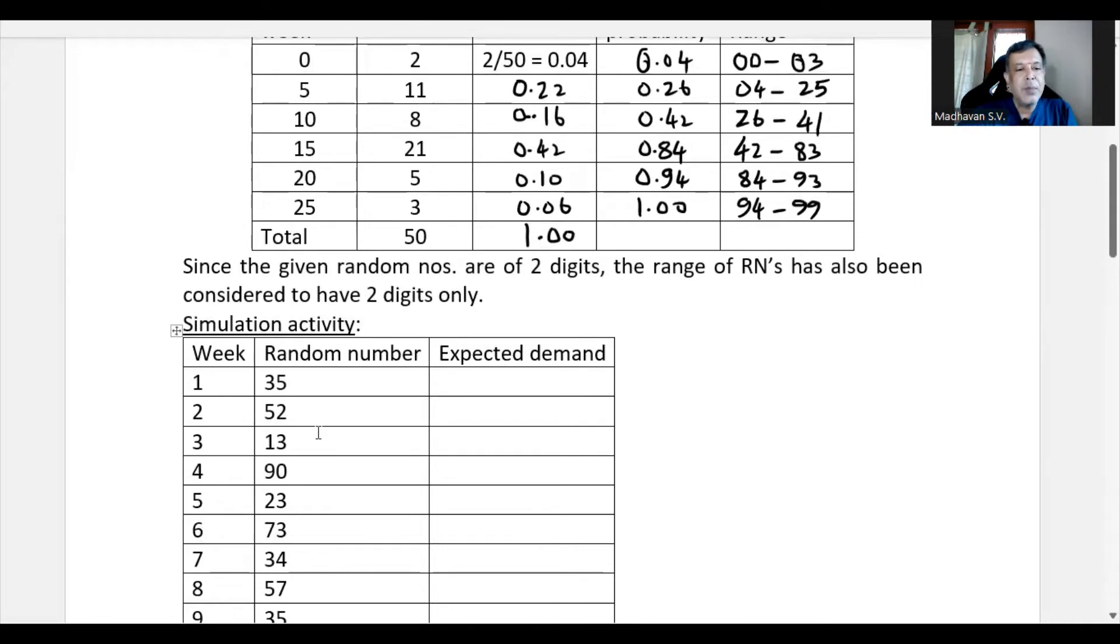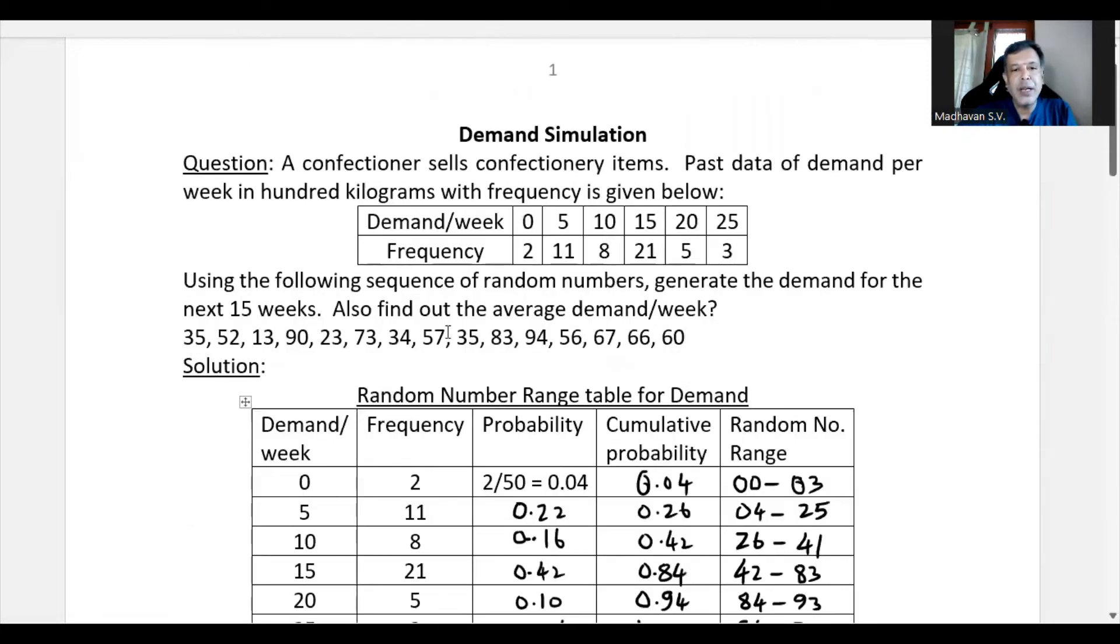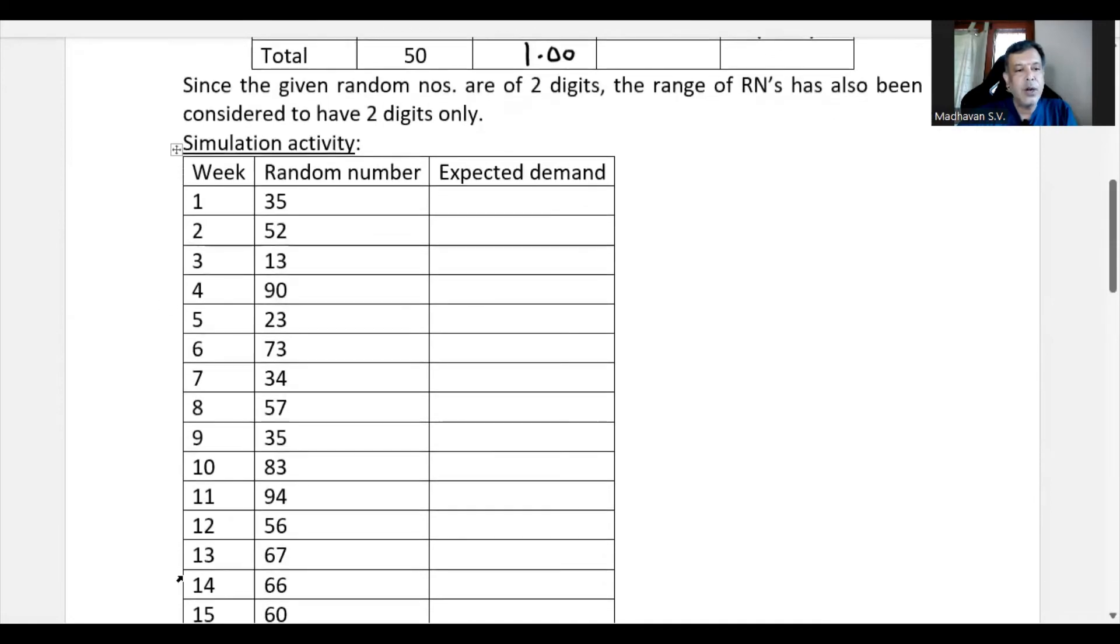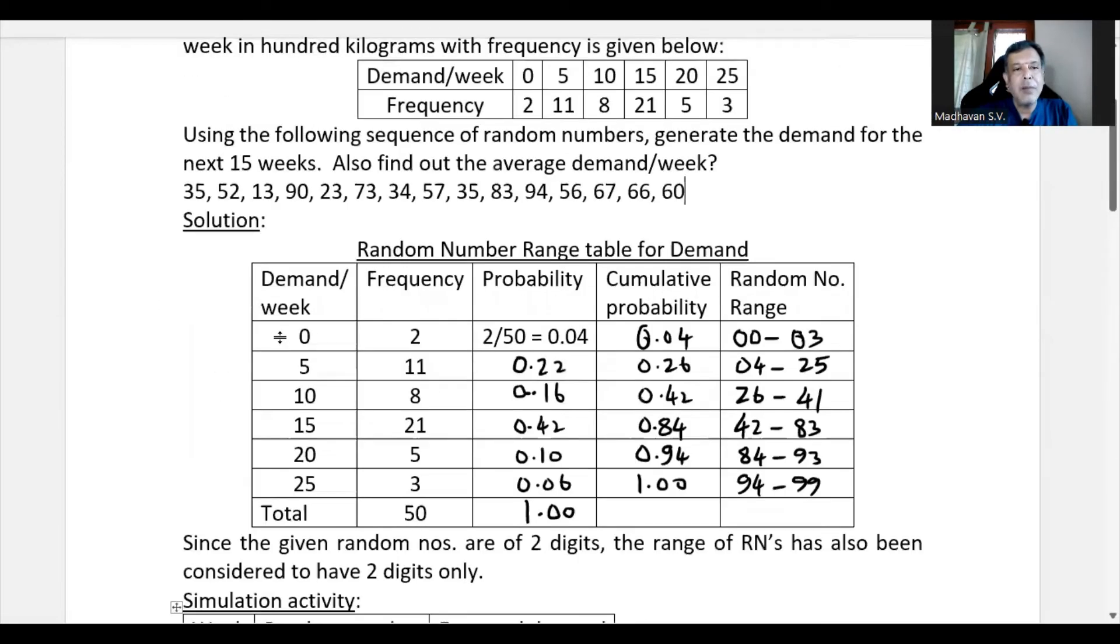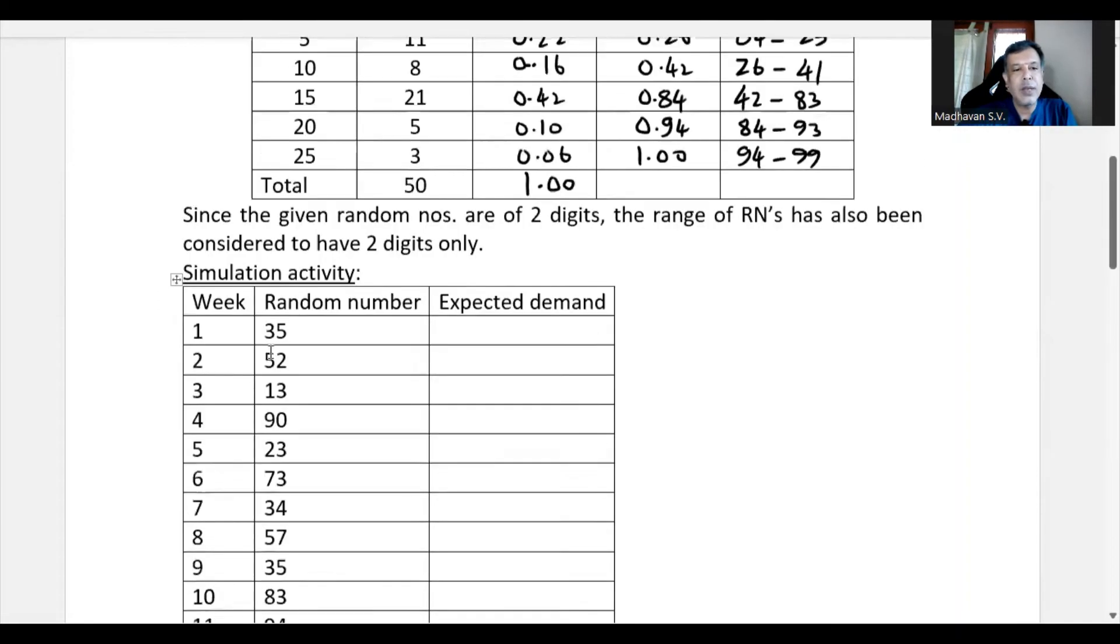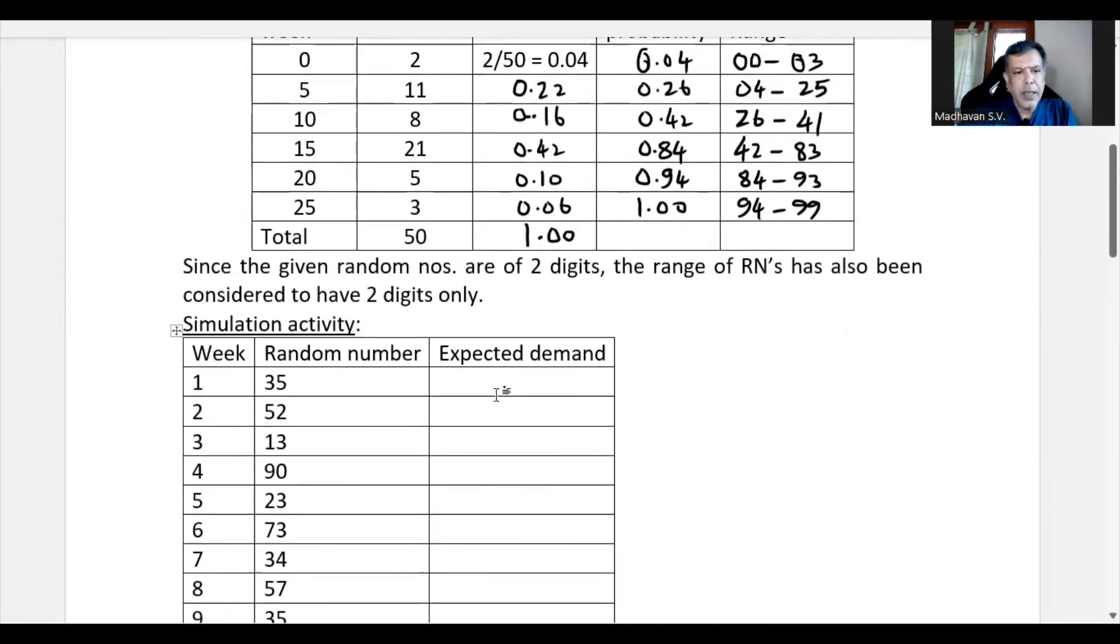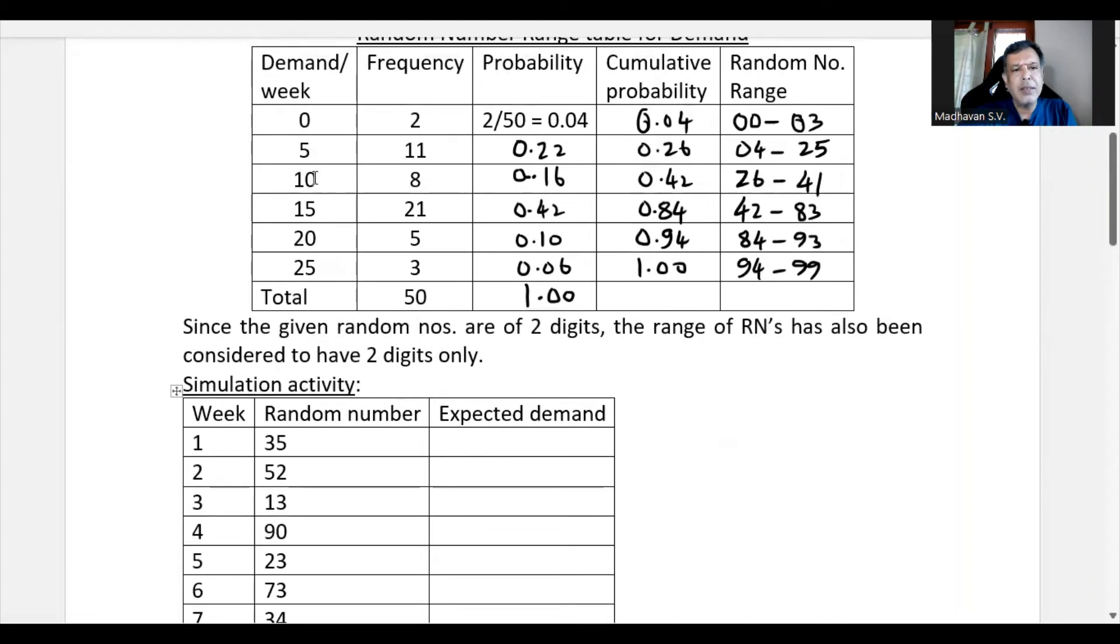Now, these are the random numbers given. We have been asked to simulate it for 15 weeks, next 15 weeks. So we wrote the weeks 1 to 15 and whatever random numbers which are given in the question, those random numbers are written here. Now, the expected demand. We need to locate where this random number 35 lies. It is lying here 26 to 41. The corresponding demand is 10. So I will write here expected demand as 10.